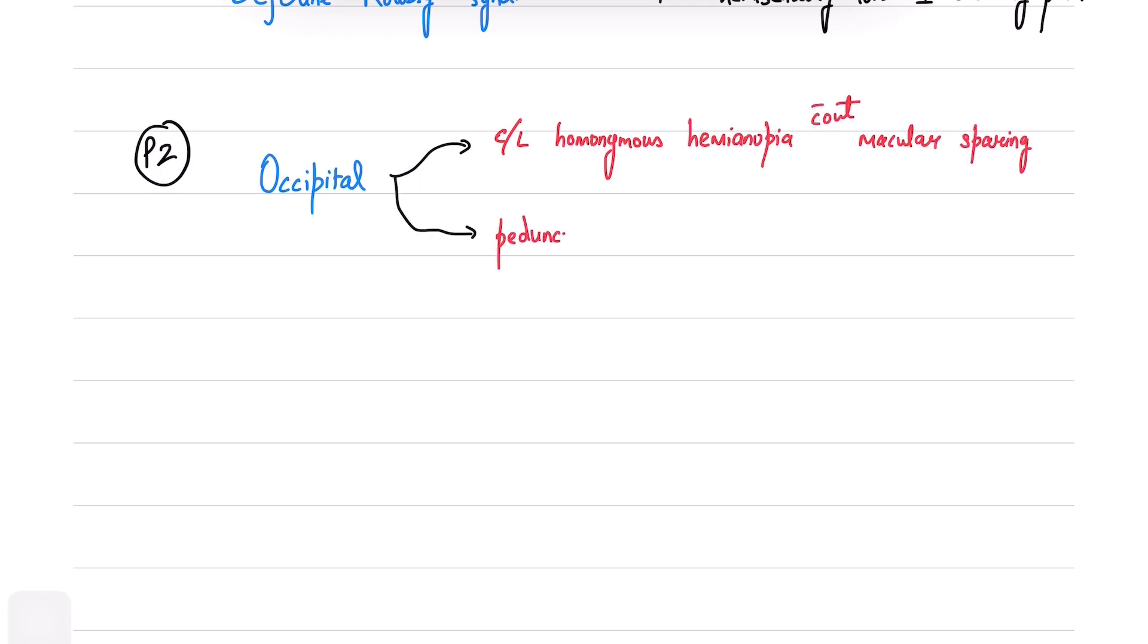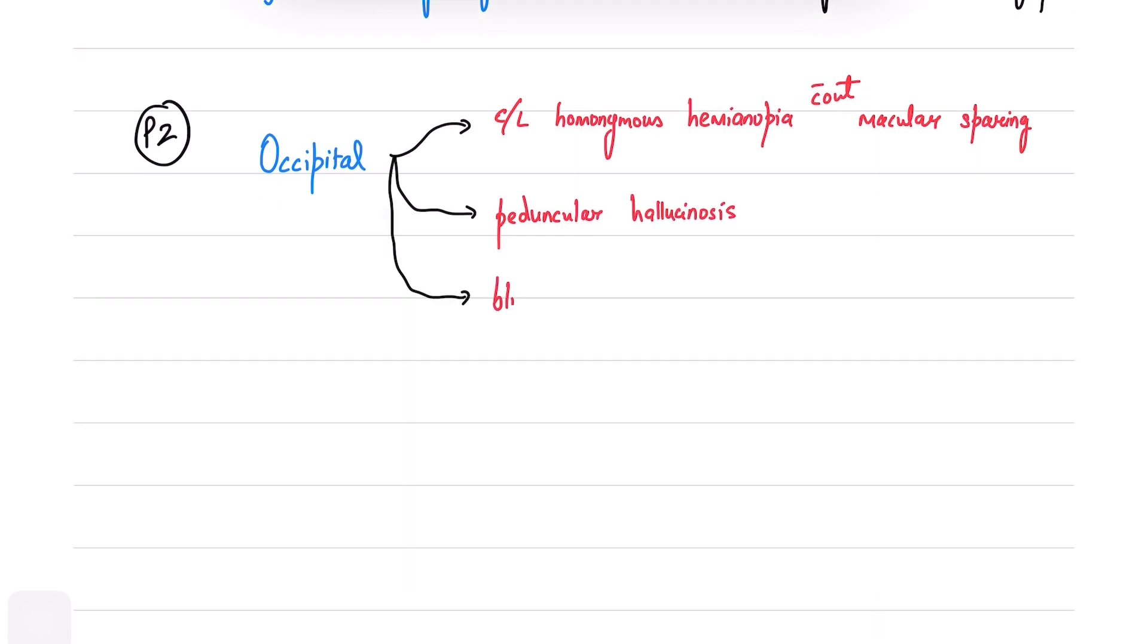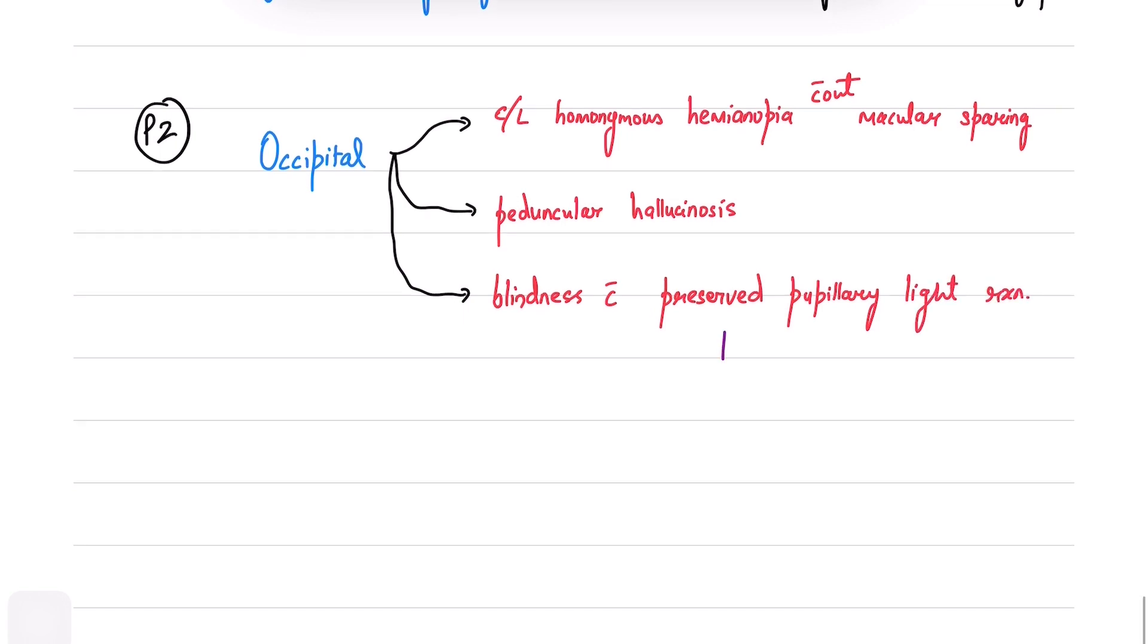Peduncular hallucinosis, which is visual hallucination of brightly colored objects, is also seen. Bilateral occlusion of distal PCA will produce blindness with preserved pupillary light reaction. The patient will be unaware of this blindness and may even deny it, which is known as Anton's syndrome.